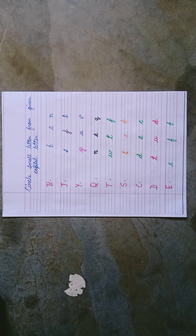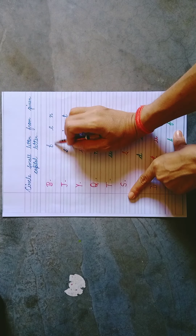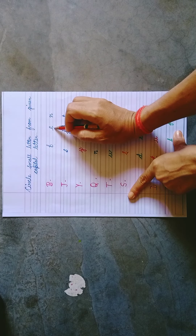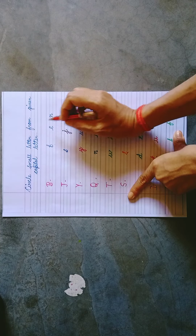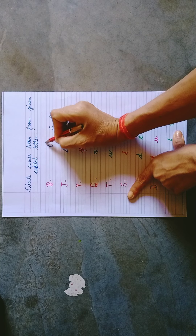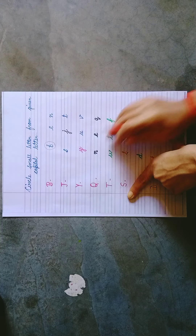Okay students, so what do you have to do with A? You have small b, small e, and small a as options. So which is correct? This one is correct — small a is the correct answer for capital A.